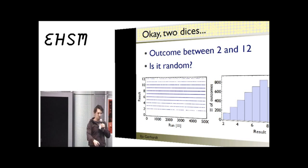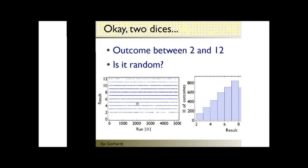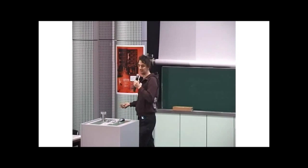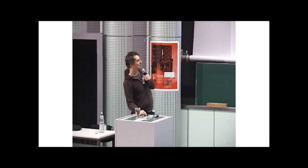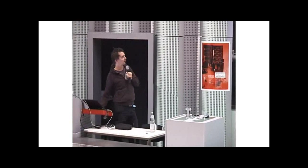If I throw the two dice about 5,000 times, the outcome is a number between 2 and 12. Is it a random number between 2 and 12? I ran this experiment on a computer. One approach is to make a histogram of the results. The histogram shows that for example the number 7 has more valid outcomes than 2 or 12. So is it random? I hope to answer this during the talk.